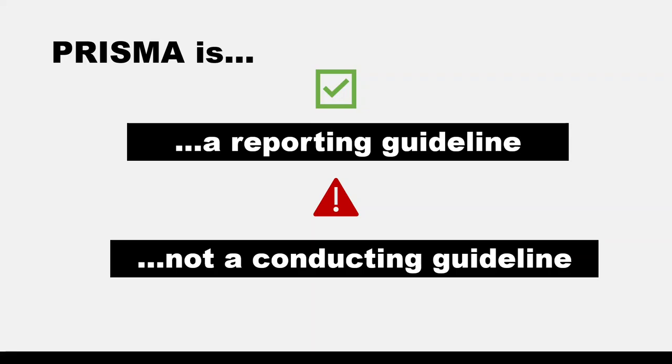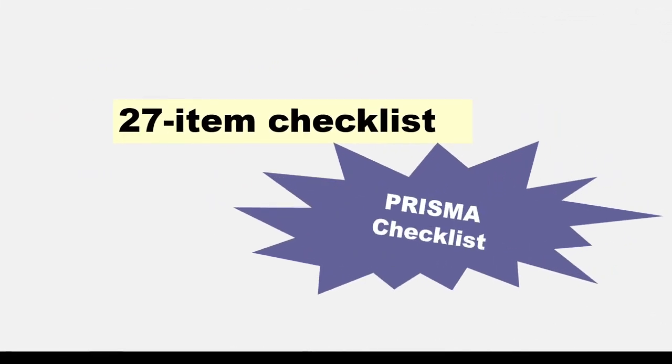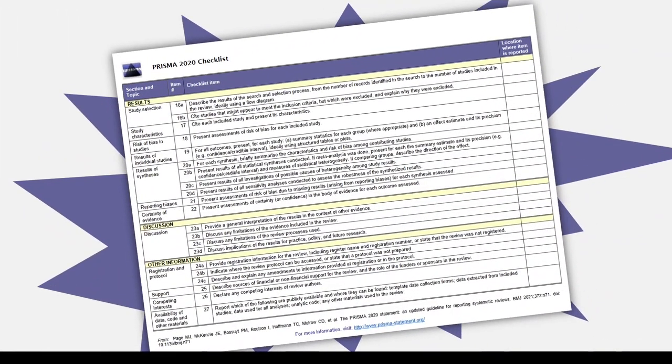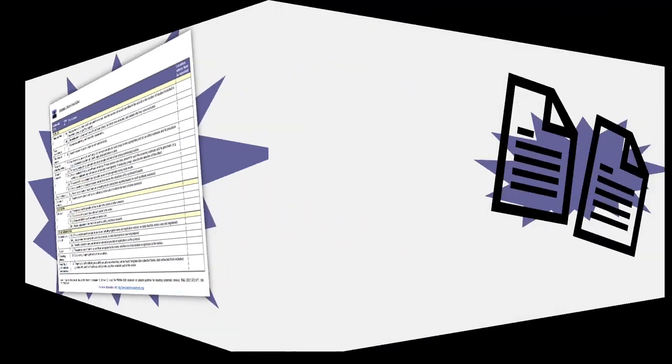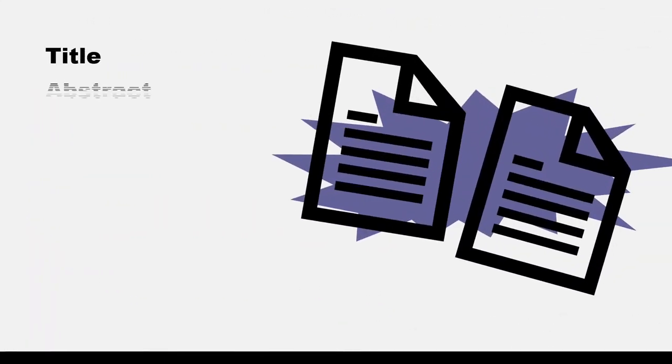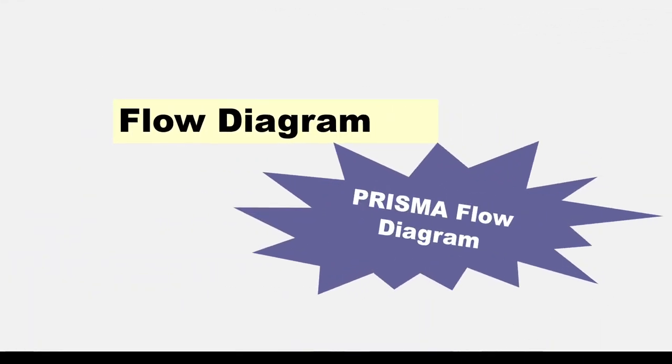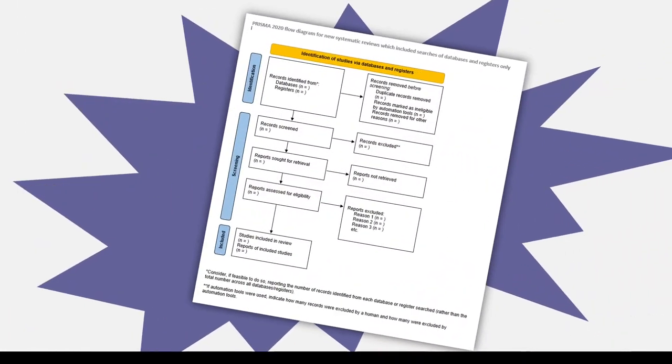PRISMA contains a 27-item checklist. Each item falls under one of six sections and provides guidance for how to report your systematic review. There is a section for title, abstract, introduction, results, discussion, and finally, other information. The PRISMA Statement also includes the PRISMA flow diagram. It is a diagram that details your literature search, your eligibility screening steps, and your included and excluded articles. You've probably seen this before.